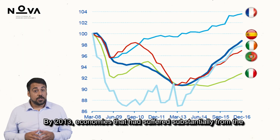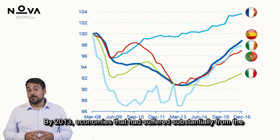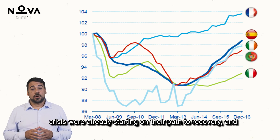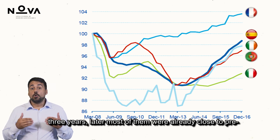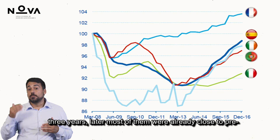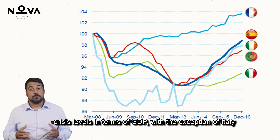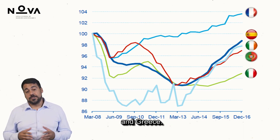By 2013, economies that had suffered substantially from the crisis were already starting on their path to recovery. Three years later, most of them were already close to pre-crisis levels in terms of GDP, with the exception of Italy and Greece.